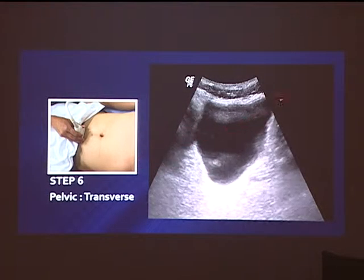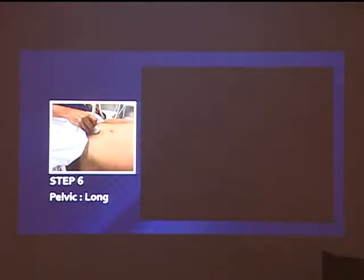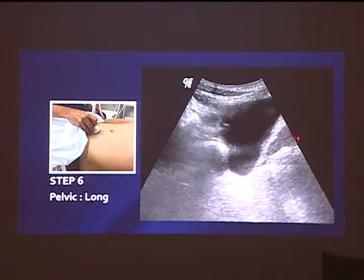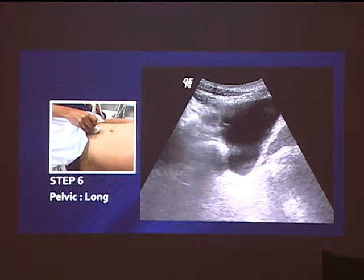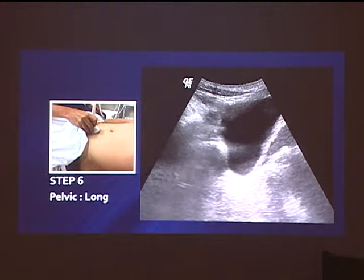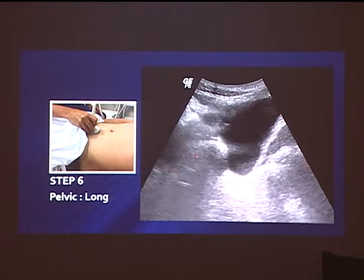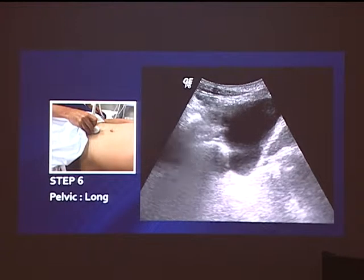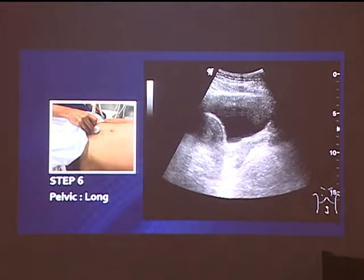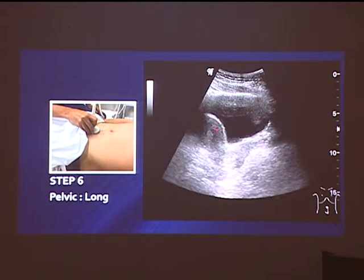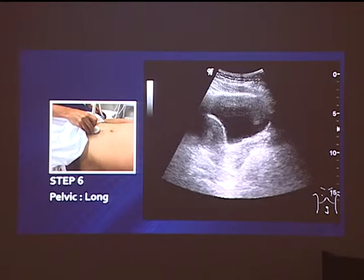For the pelvic view — first the transverse view — you see a distended bladder, and there should not be fluid outside. Longitudinal view: bladder — this is a male patient — there should be no fluid around here; these are just bowel gas. For this view to be successful, the bladder must be distended. If the bladder is collapsed, all the bowel gas will come in and you will not be able to appreciate any fluid that collects there.